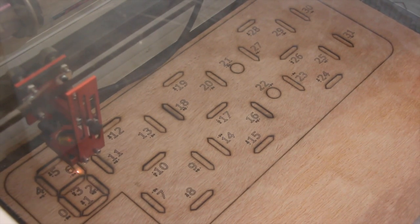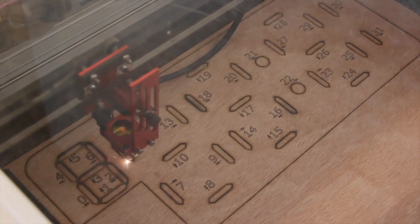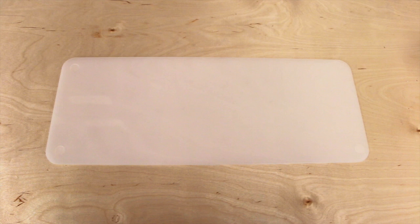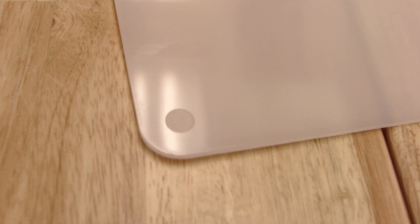For the neopixel assembly layer, the text should be etched, not cut, onto the surface. Similarly, the holes in the acrylic layer should be etched on the bottom, not cut.